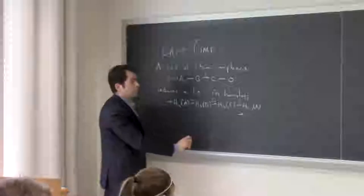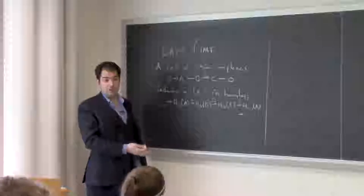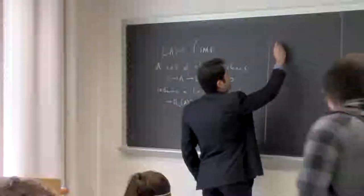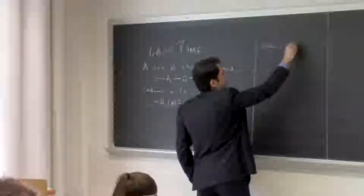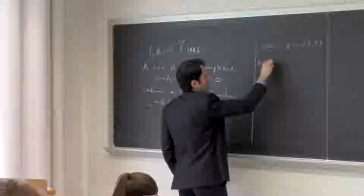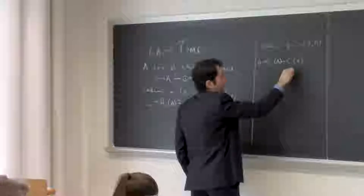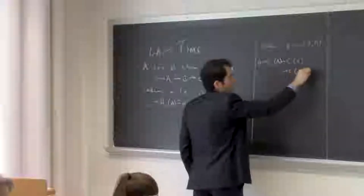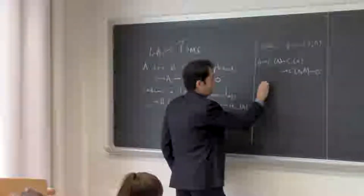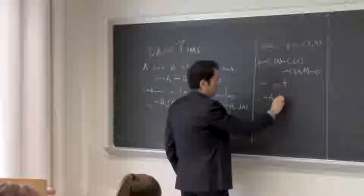Applying this to natural short exact sequences in singular homology — singular chain complexes — for example, given a pair, we have the chains in A mapping into the chains in X, mapping into the relative chains. So applying it to this short exact sequence, we get the long exact sequence of a pair.